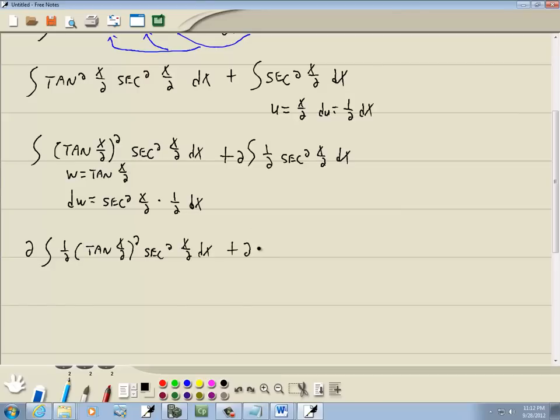And this right here I can go ahead and do my u substitution. This becomes secant squared u du. The x over 2 becomes u. The 1 half dx inside becomes du.